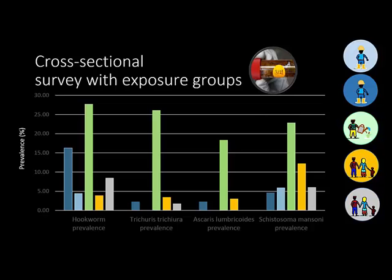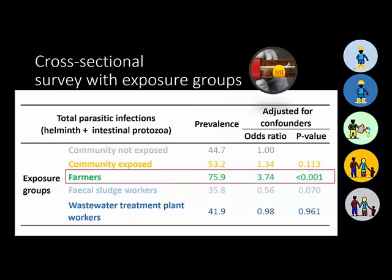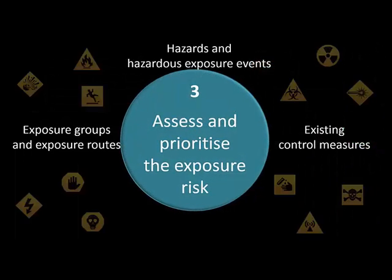This graph shows intestinal helminth infections for all exposure groups. The highest prevalence was found among farmers, while workers were less infected. There was considerably high prevalence of Schistosoma mansoni across all study groups, with the highest overall infection prevalence of 75.9% among farmers, who are much more likely to be infected than community members not directly exposed to wastewater in the Nachavubo area.